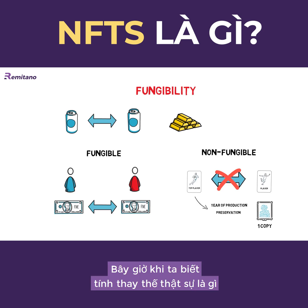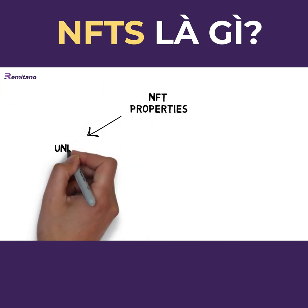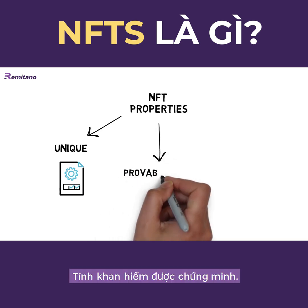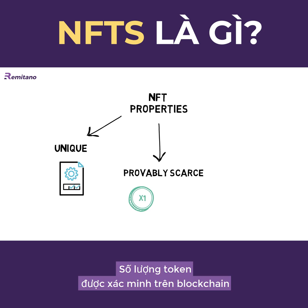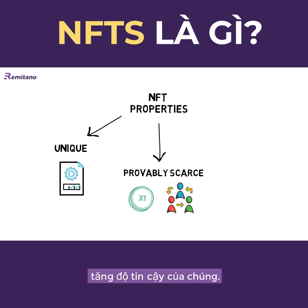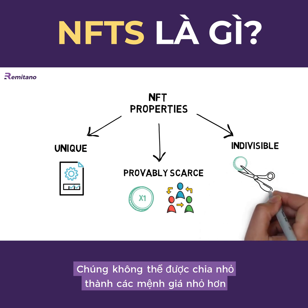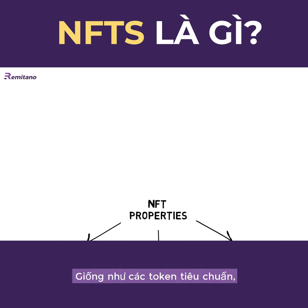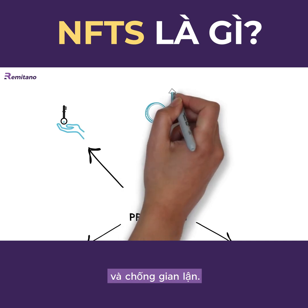Now that we know what non-fungible actually means, let's see what the most common properties of NFTs are. Unique — each NFT has different properties that are usually stored in the token's metadata. Provably scarce — there is usually a limited number of NFTs, with an extreme example of having only one copy; the number of tokens can be verified on the blockchain, hence its provability. Indivisible — most NFTs cannot be split into smaller denominations, so you cannot buy or transfer a fraction of your NFT. Similarly to standard tokens, NFTs also guarantee ownership of the asset, are easily transferable, and are fraud proof.